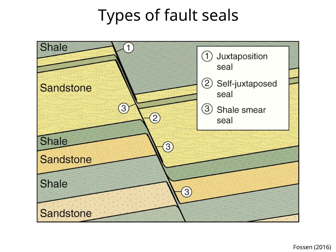The second type is self-juxtaposed seals, where reservoir units are juxtaposed across the fault, but the fault itself is a seal that prevents fluid flow between the reservoirs. The third type is shale smear seals, where there is a smear of shale along the fault, and this shale prevents fluid flow across the fault.